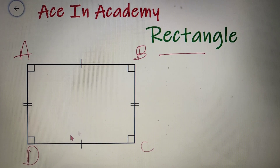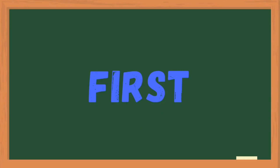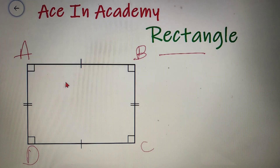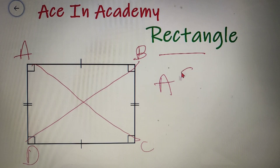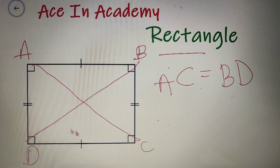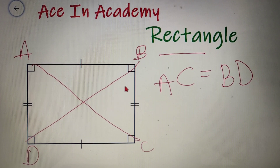There are some additional properties of a rectangle that make it unique from the other quadrilaterals, so let's discuss them one by one. The first property is that the diagonals of a rectangle are equal — that is, AC is equal to BD. If you don't know what a diagonal is, diagonals are straight lines that join the opposite vertices in a polygon.